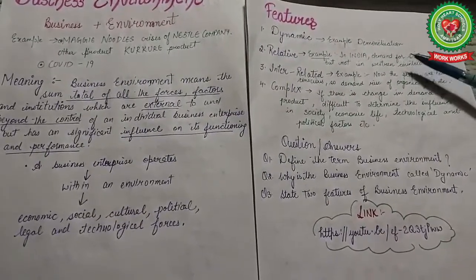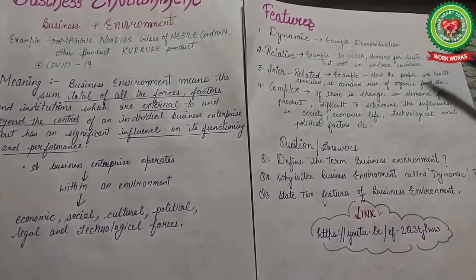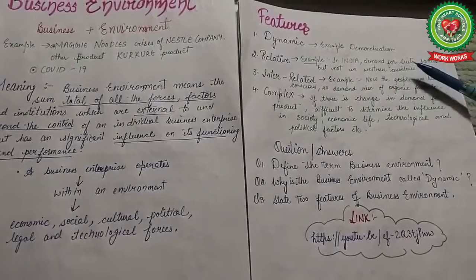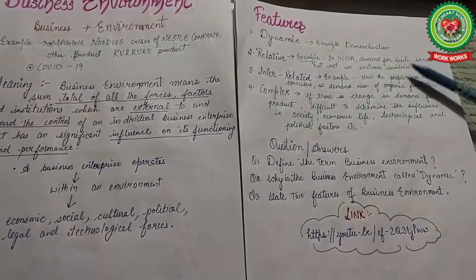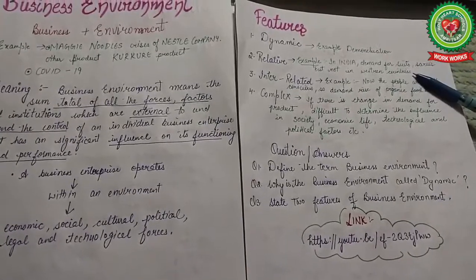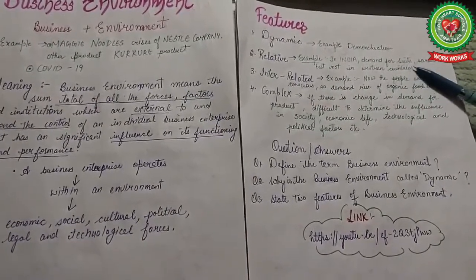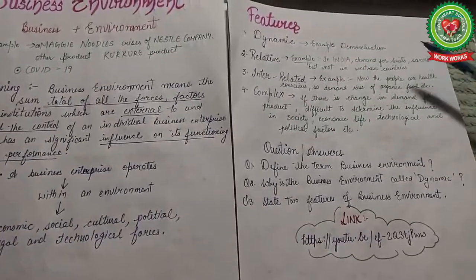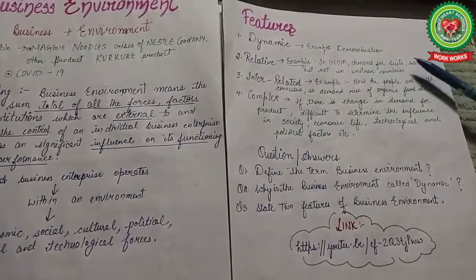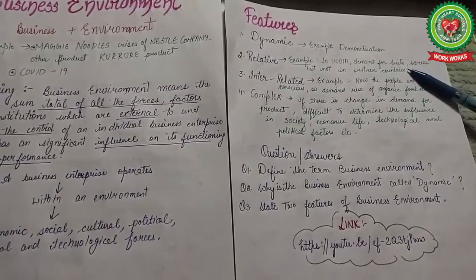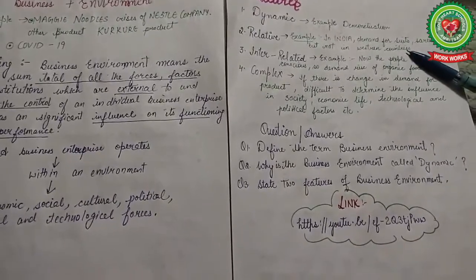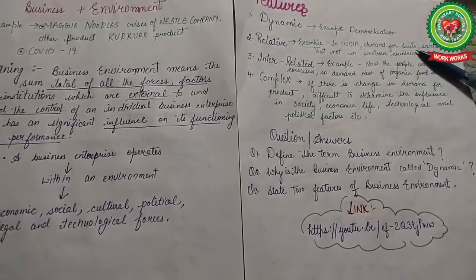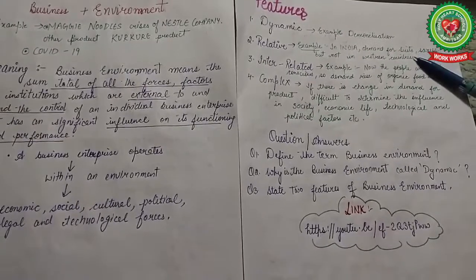The second feature is 'relative.' Relative means things are related to each other but may differ from country to country or region to region. For example, in India there is more demand for suits and sarees, but in western countries their demand is less. So business environment is relative to the place and time.